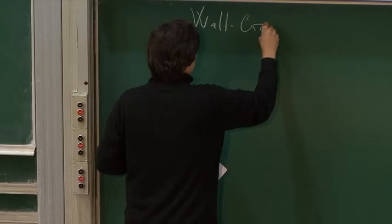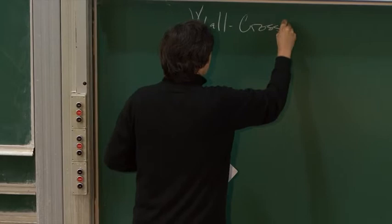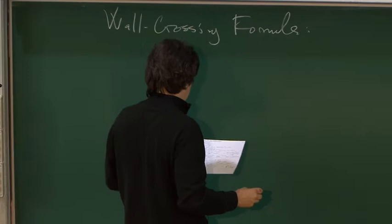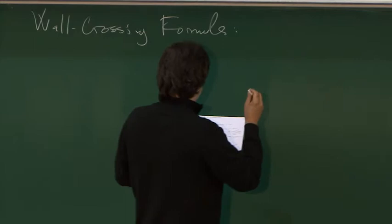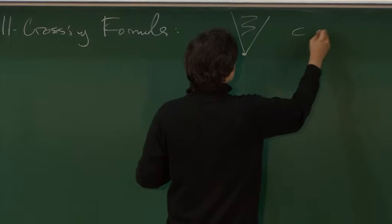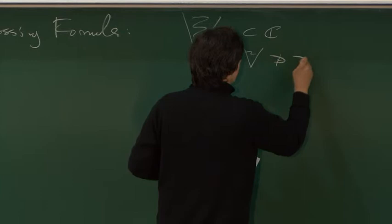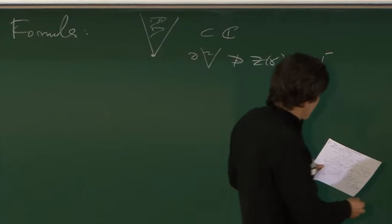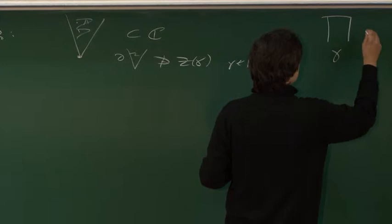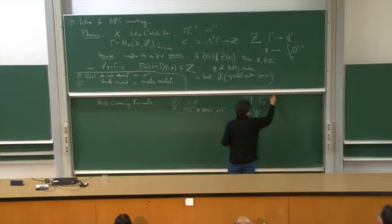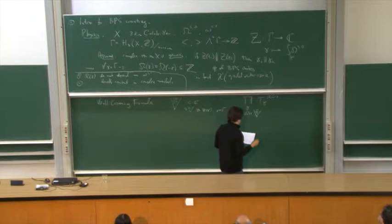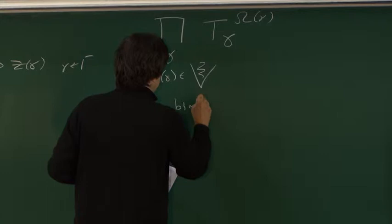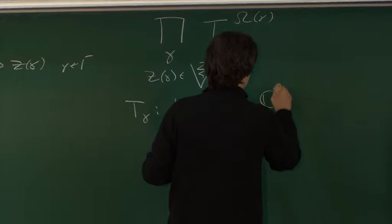The wall crossing formula which describes how the numbers jump is roughly the following. You consider some angle sector in C such that the boundary doesn't contain elements of Z of gamma. You get some discrete set which is everywhere dense, but for rational slope it will be okay. Then you make the following product: you take product of all gamma sitting in this sector, making product of certain transformations to power omega of gamma.